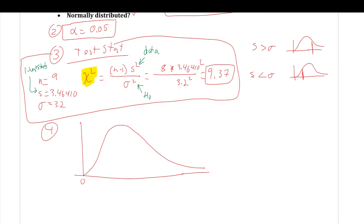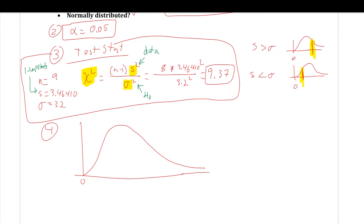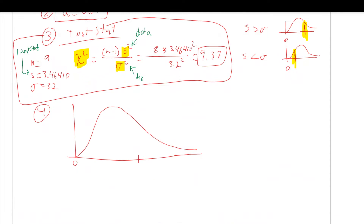The idea behind the placement is that this test statistic is a ratio between s and sigma. If s is much larger than sigma, the ratio is much larger and further from zero. If s is less than sigma, it's closer to zero. Now let's switch over to the calculator to compute the p-value.